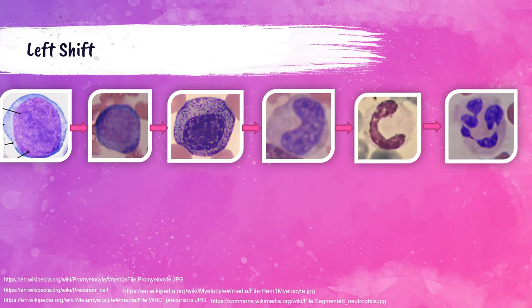This next slide is a picture representation of what we just discussed. Using the pointer: this one here is a blast, then we have a promyelocyte, a myelocyte, a metamyelocyte, a band or banded neutrophil, and a segmented neutrophil — which is the most mature one. We also call these segs.